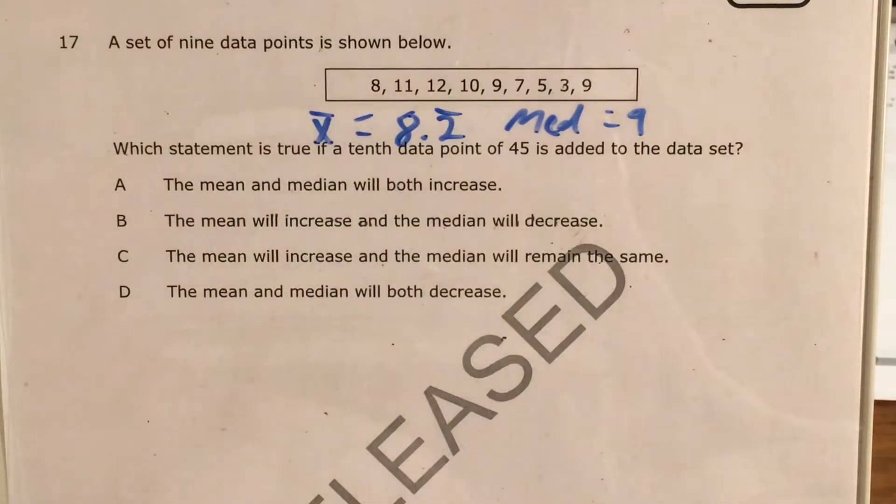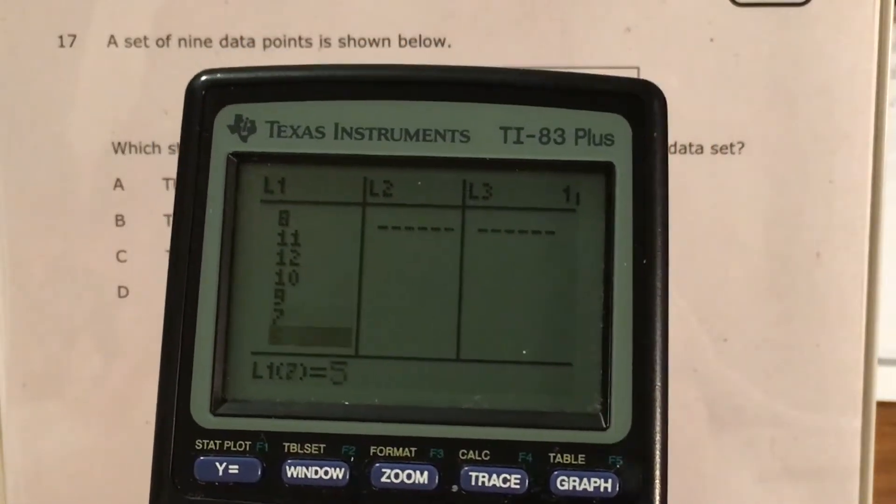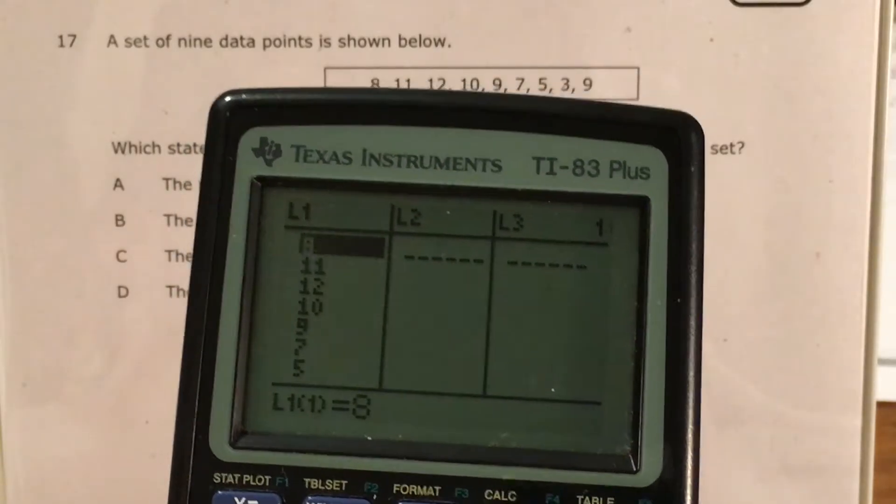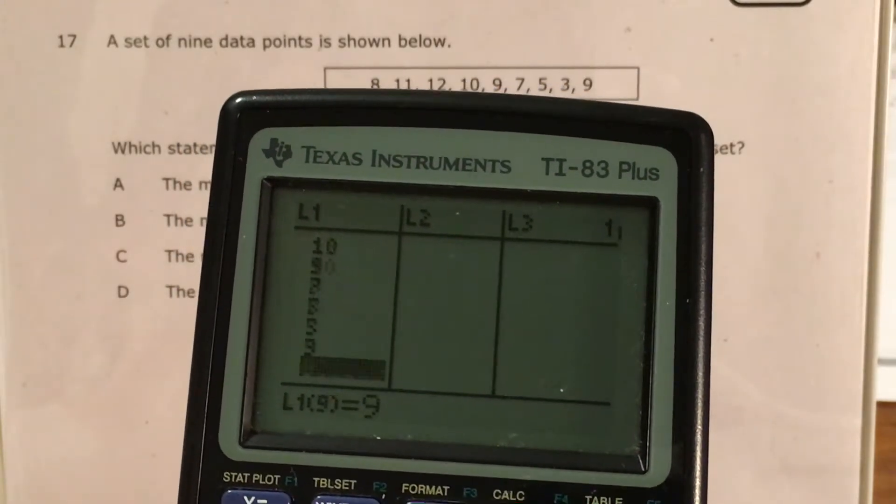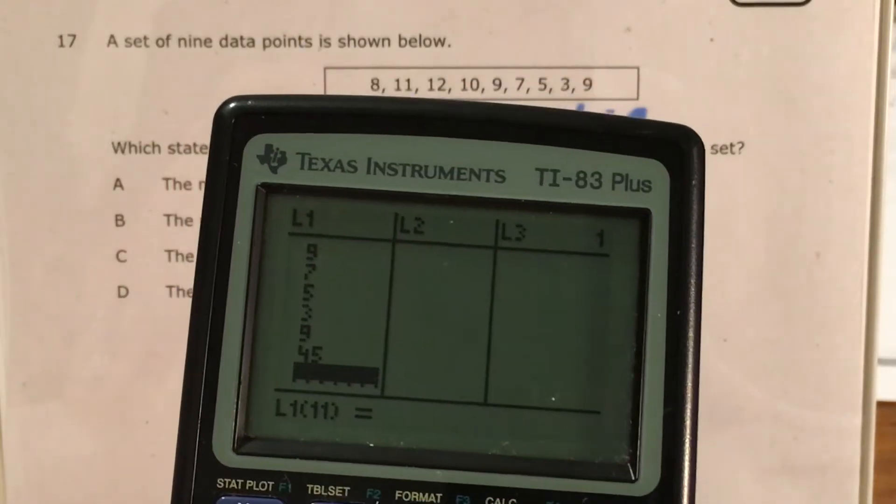So now I need to add the number 45 to the data set. Stat, edit, come all the way down until I find a blank space. Don't go too far as I just did twice. I add the number 45, press enter, and now it's locked in.